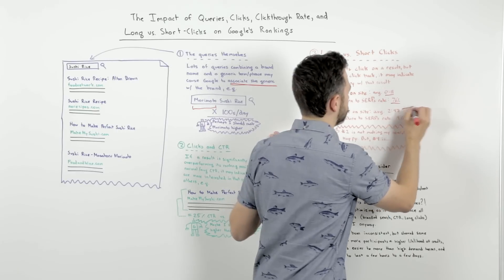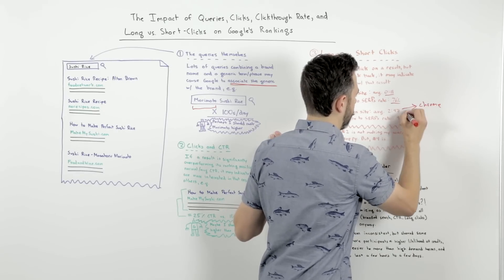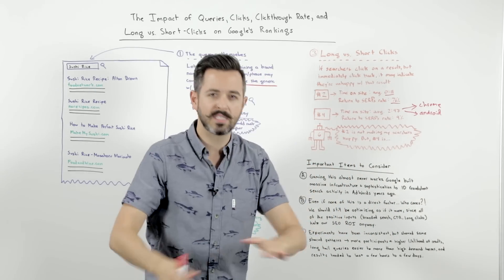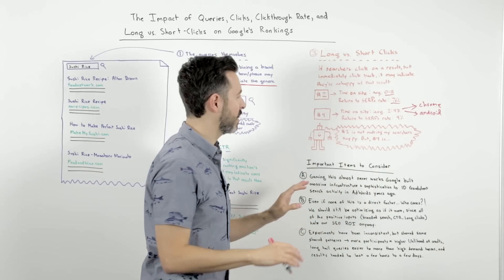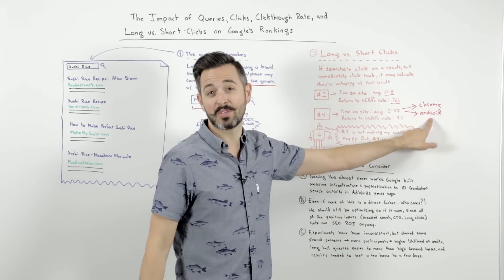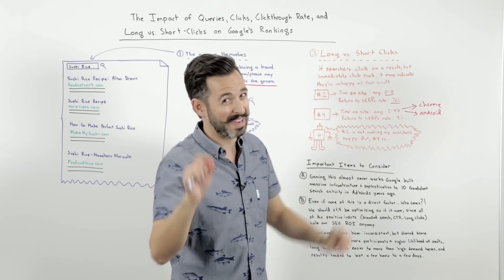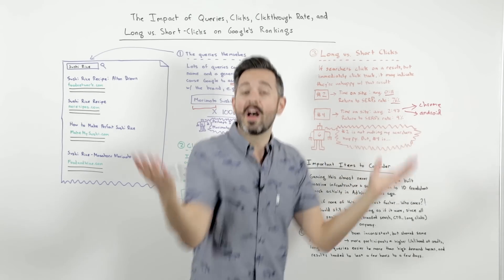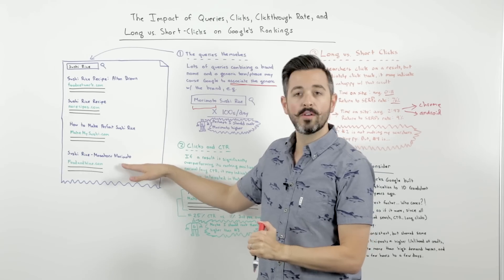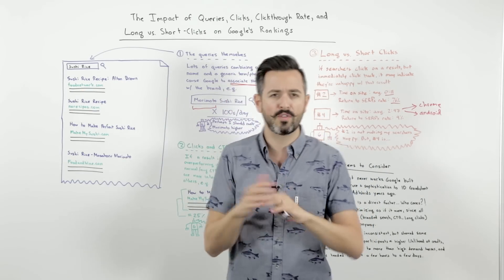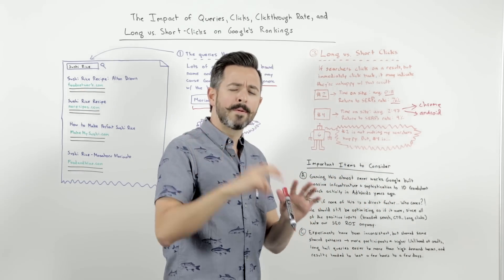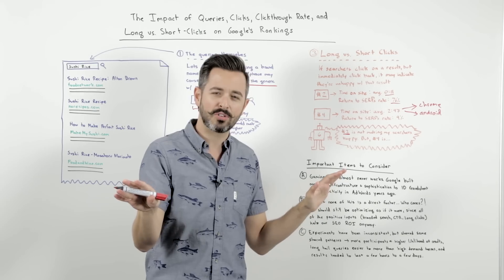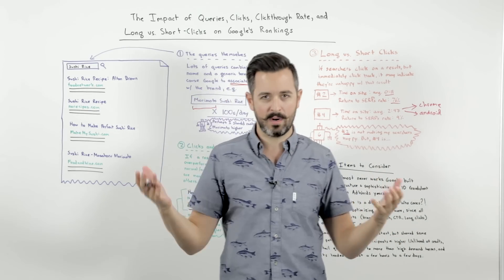But number four, the Food and Wine result from Morimoto, has an average time on site of two minutes and 50 seconds. Google can get this data from Chrome and Android — they are not necessarily looking at the same numbers you see in your analytics, and they're not taking it from Google Analytics. But certainly, if you look at the terms of service for Chrome and Android, they are allowed to collect that data and use it any way they want. The return-to-SERPs rate for Food and Wine is only 9%, meaning 91% of people stay on the page — they're satisfied. This tells Google that maybe the number two result is not making searchers happy, and potentially they should rank number four instead.